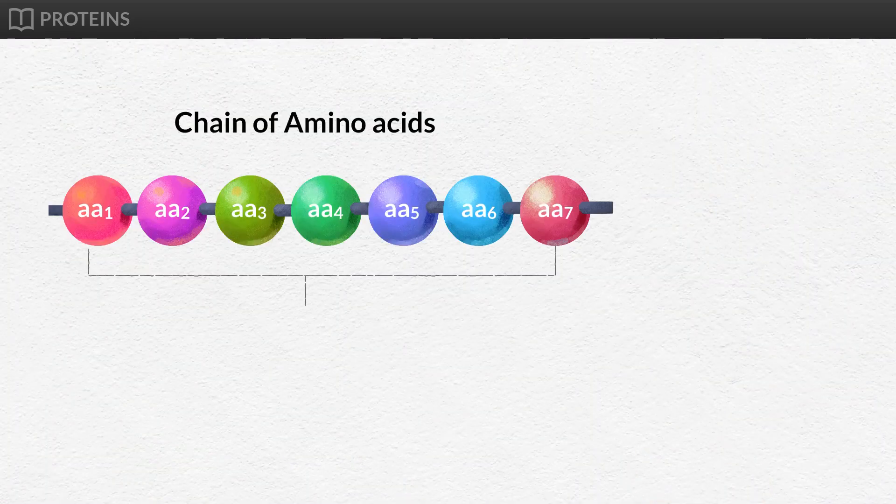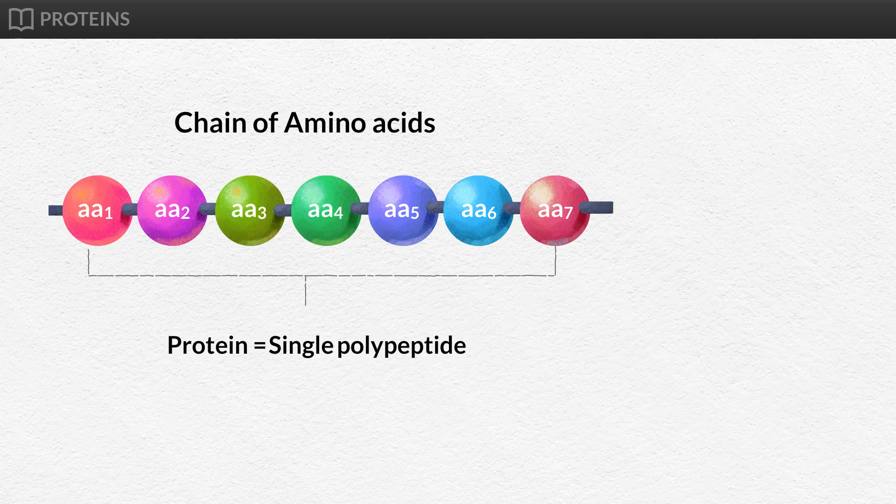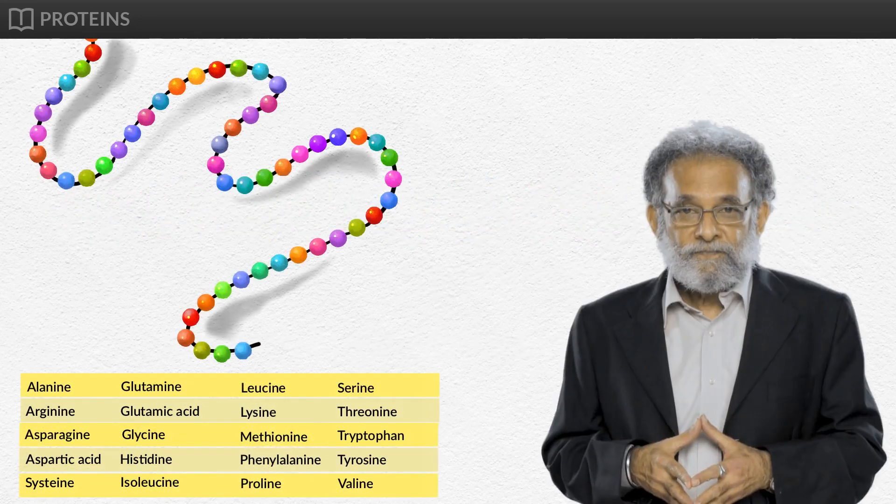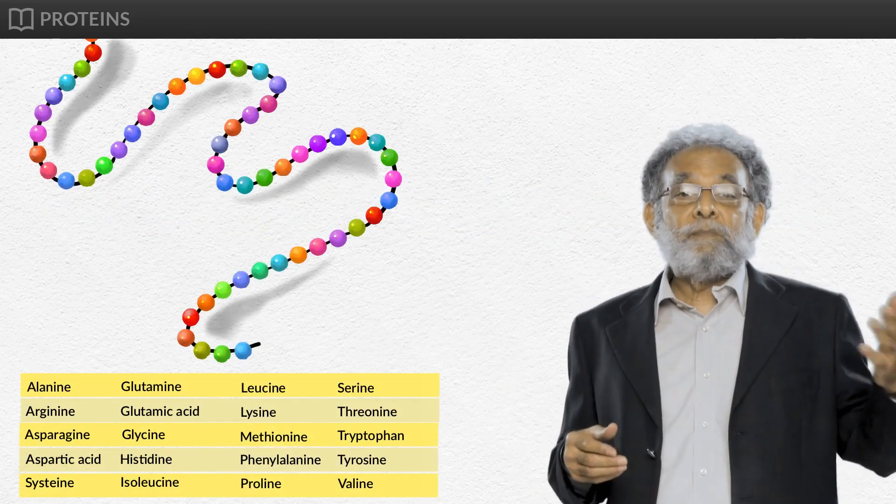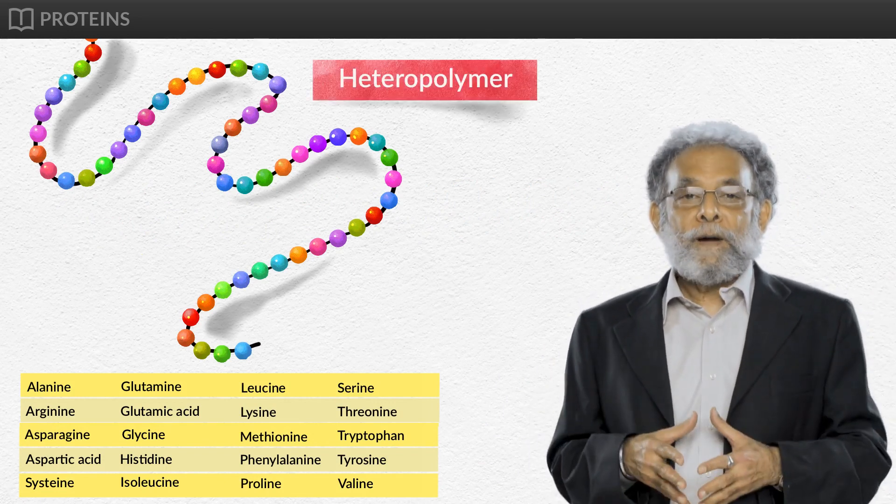The term polypeptide is often used interchangeably with protein. However, a single polypeptide must be at least 50 amino acids long in order to qualify for the term. As there are 20 types of amino acids in a protein, a protein is called a hetero-polymer.